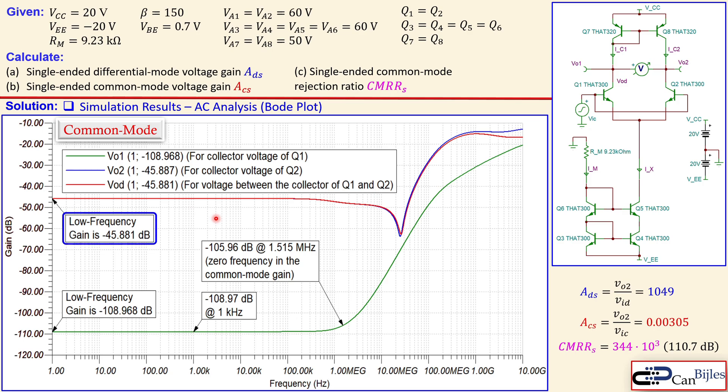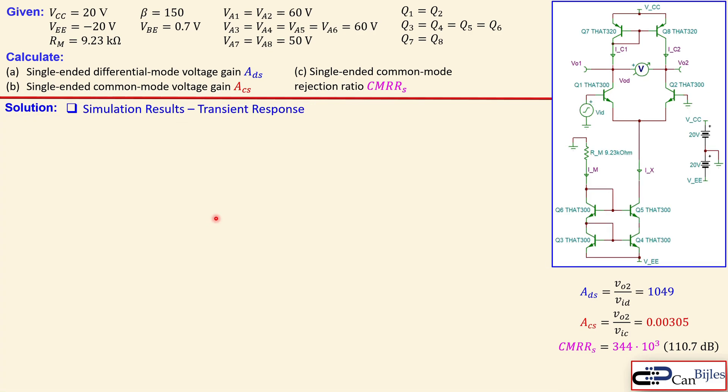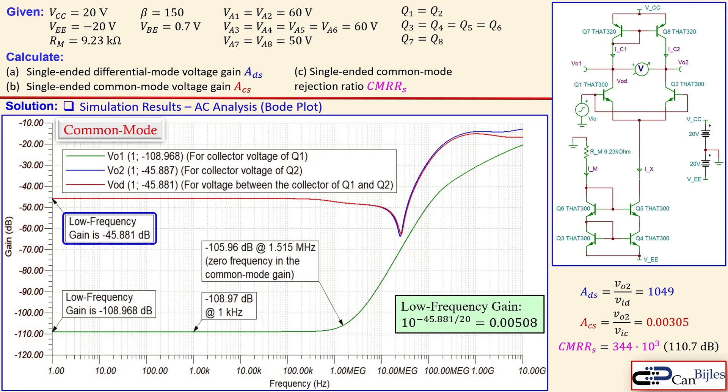And this is now what you have as the gain. And if you convert that now to the scalar value. And that is then 0.00508.